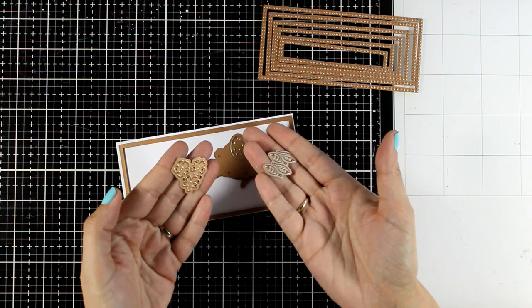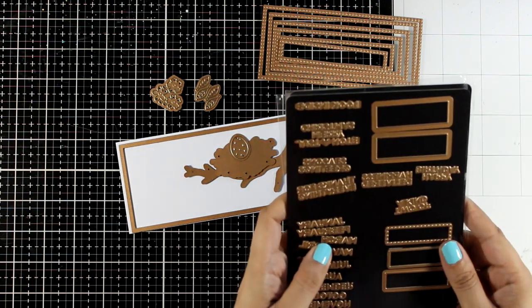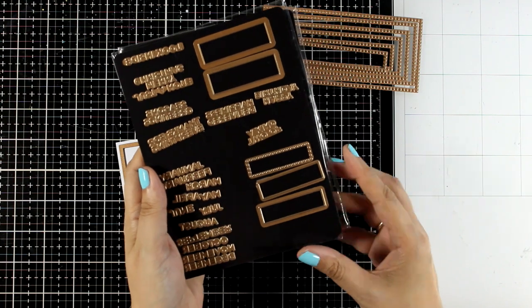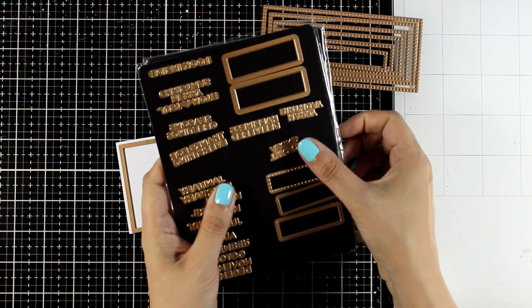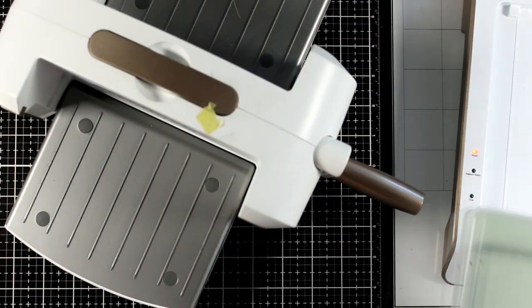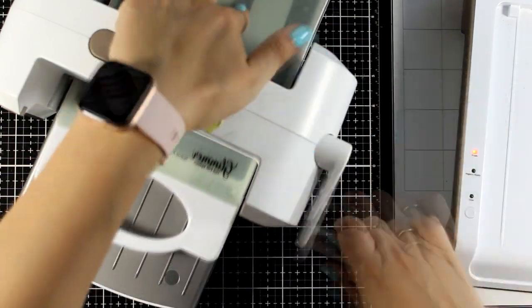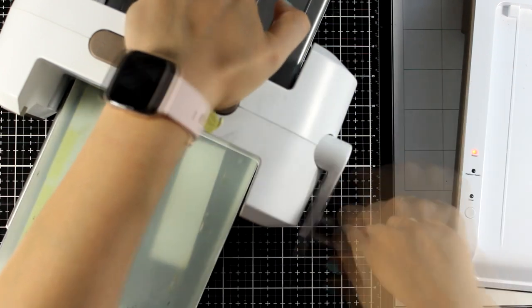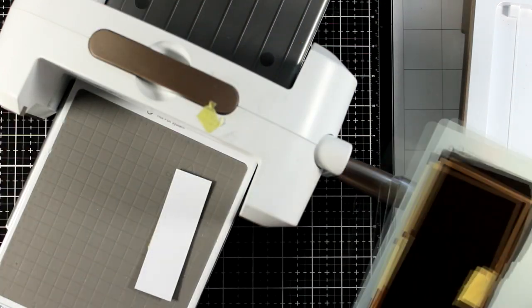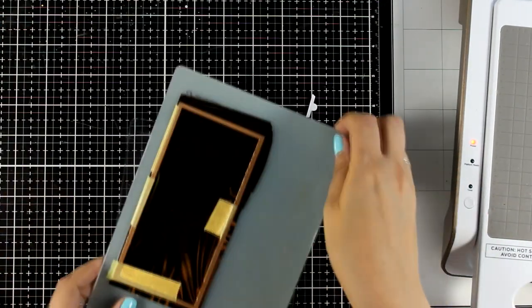I'm going to start with foiling the border and since I will have the Glimmer machine out I will also foil the sentiment. For that I went with one that says two of a kind since I'm going for a card that is for newborn twins. So I did warm the plates on my Glimmer Hot Foil machine. Now I'm going to run it through my die cutting machine. I like to do that a couple of times and with one passing I did create the border with the foiling on my main panel.